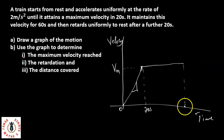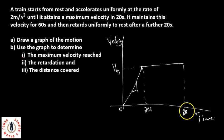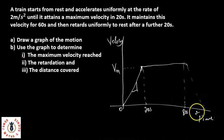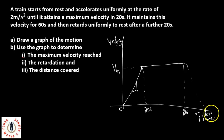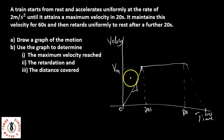It maintains this velocity for another 60 seconds. Between 20 seconds and here, that's 60 seconds, so this point would be at 80 seconds. It now starts retarding, and retards uniformly to rest after a further 20 seconds — meaning the retardation takes another 20 seconds. From 80 to here is another 20 seconds, so this point is the 100th second. We can see clearly that this train attained the maximum velocity with an acceleration of 2 meters per second squared.